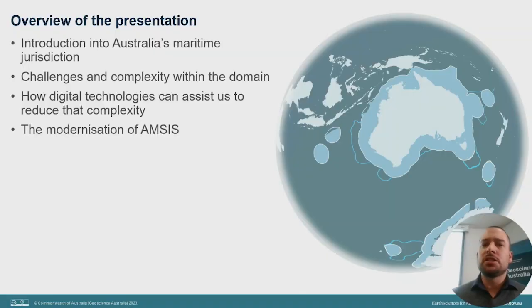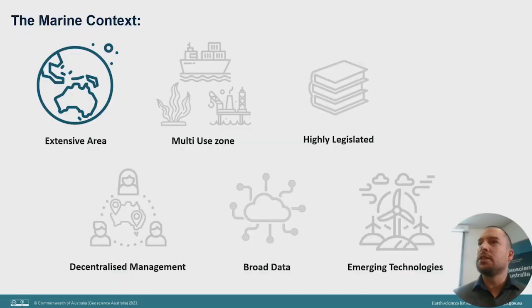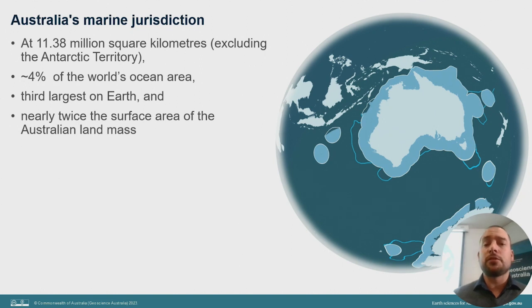Digital spatial technologies provide tools to visualise intersections and interactions between proposed and existing activities, providing users with an understanding of the various rights, restrictions and responsibilities within the jurisdiction. Geoscience Australia, through AMSIS, provides access to authoritative Commonwealth regulatory information to assist with spatial planning and sustainable management for government, industry and communities. Australia's ocean territory is the third largest marine jurisdiction on earth — at nearly 11.5 million square kilometres, excluding the Australian Antarctic territory, it's nearly twice the surface of the Australian landmass, accounting for roughly 4% of the Earth's ocean area.